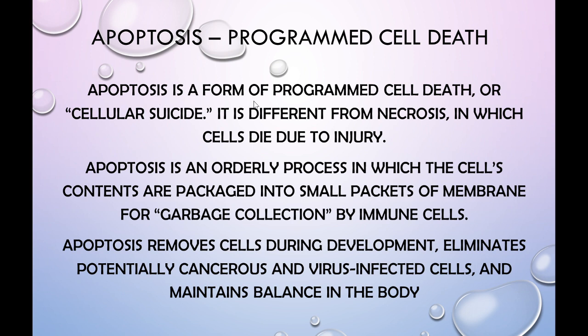Apoptosis is a form of programmed cell death or cellular suicide. It is different from necrosis, in which cells die due to injury. Apoptosis is an orderly process in which the cell's contents are packaged into small packets called apoptotic bodies, and these are removed by immune cells called macrophages.